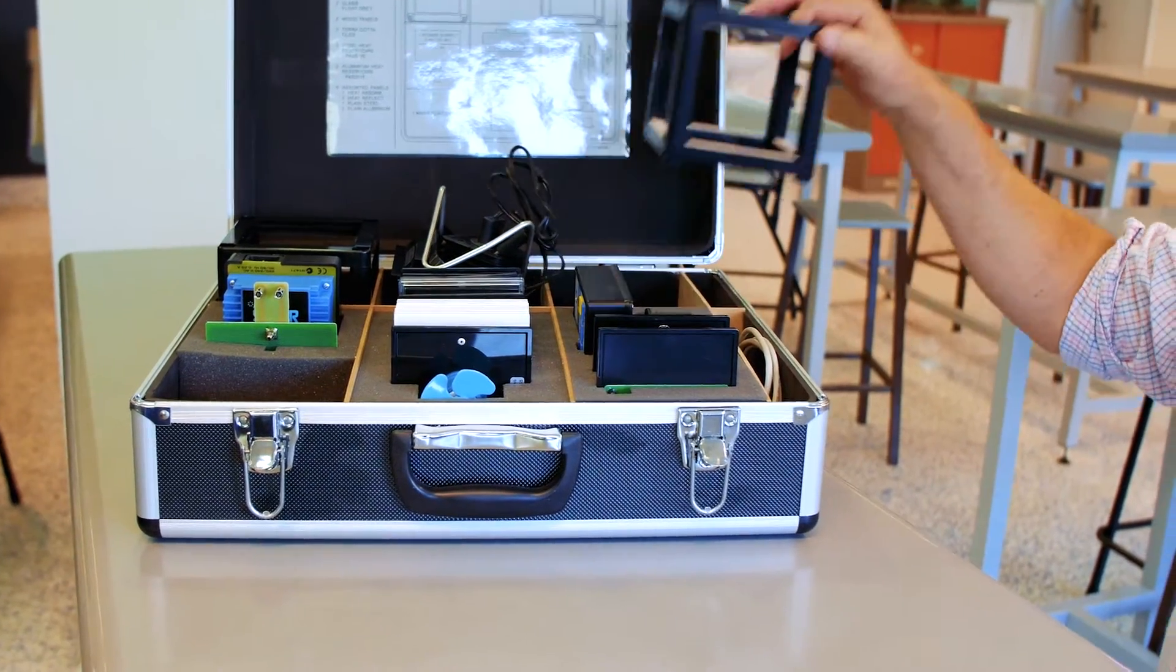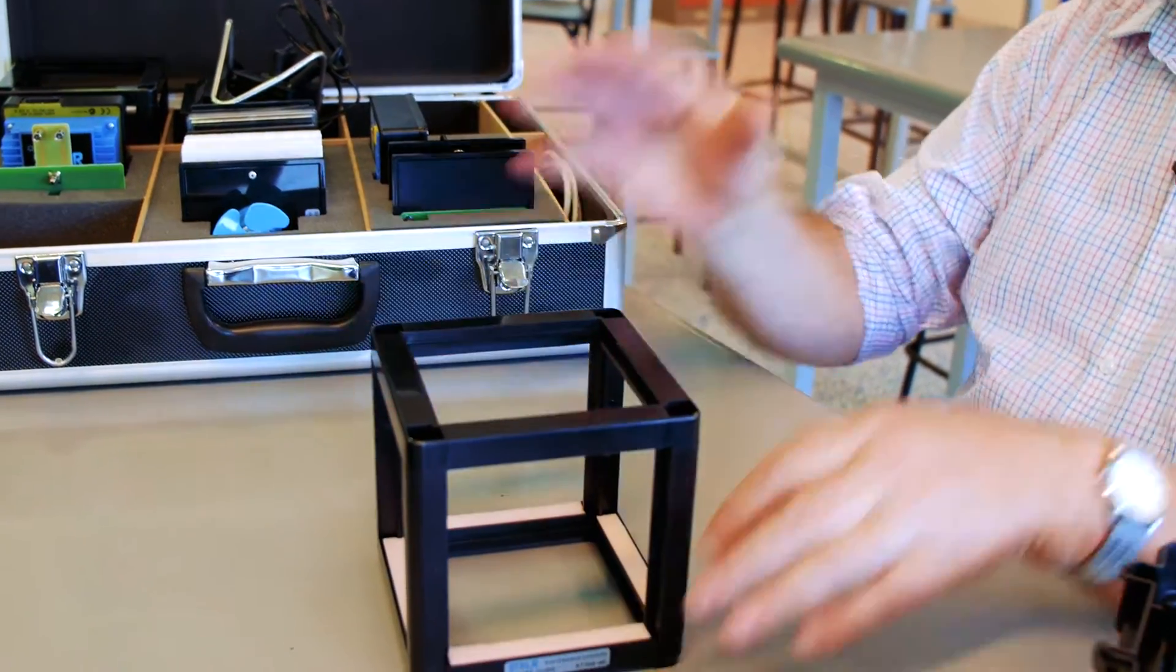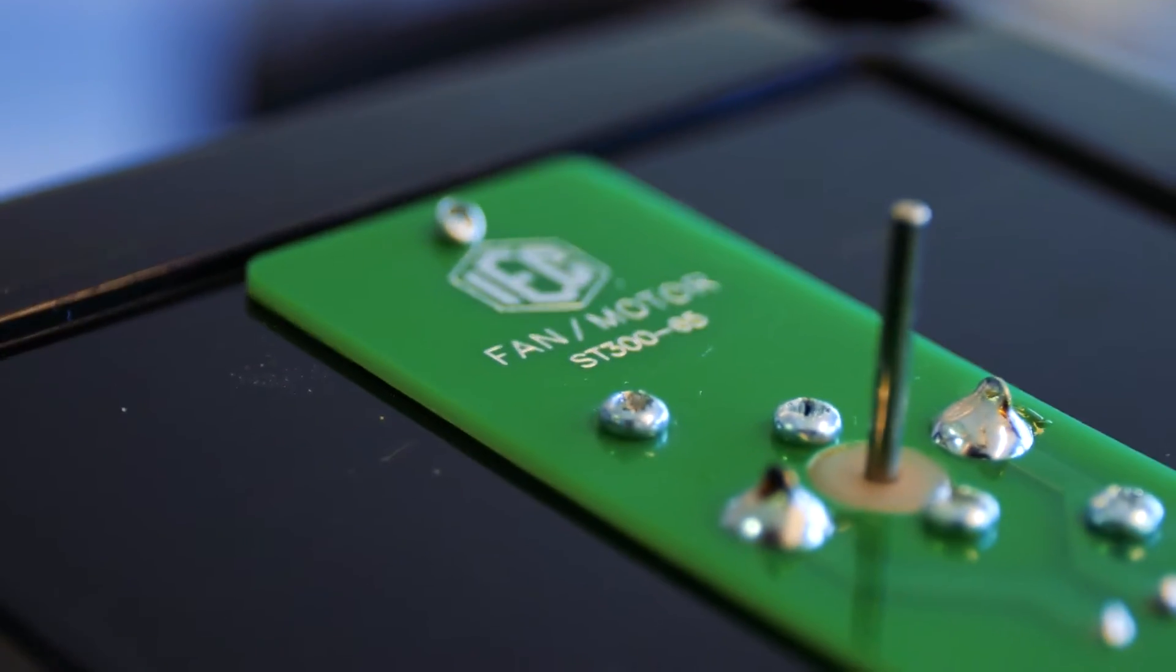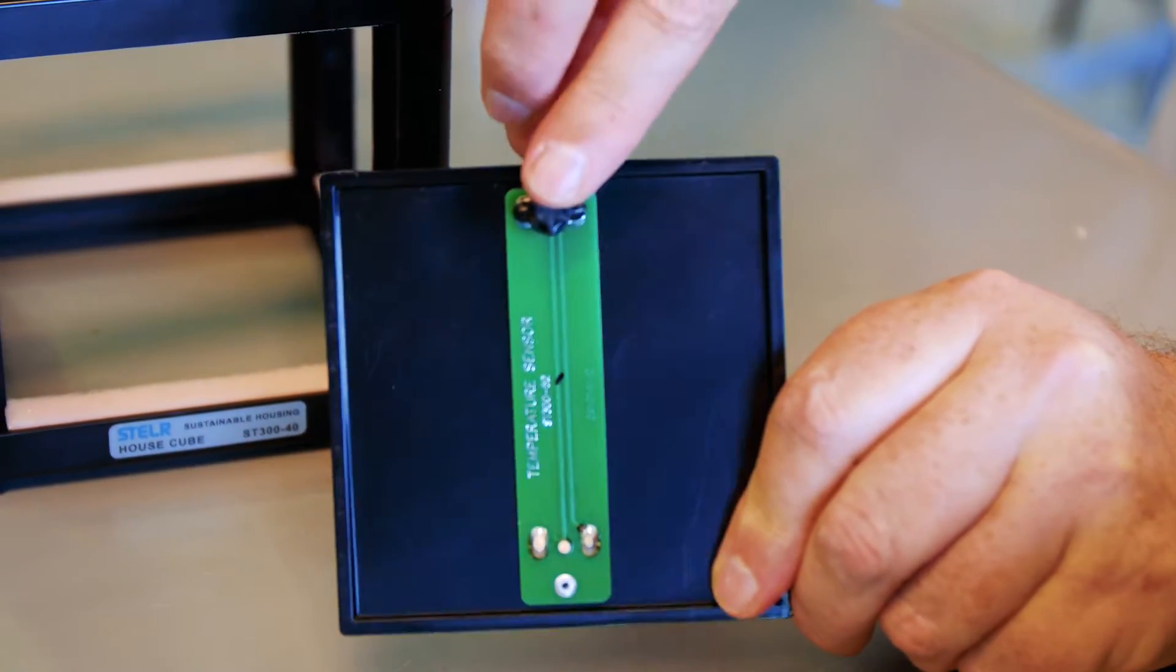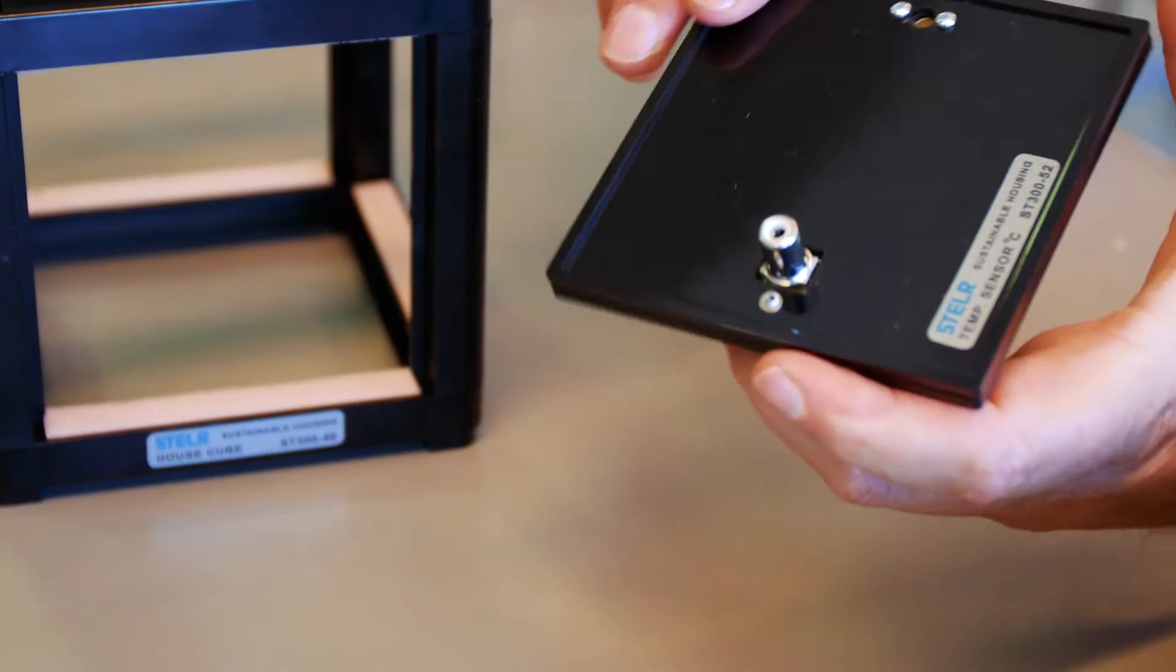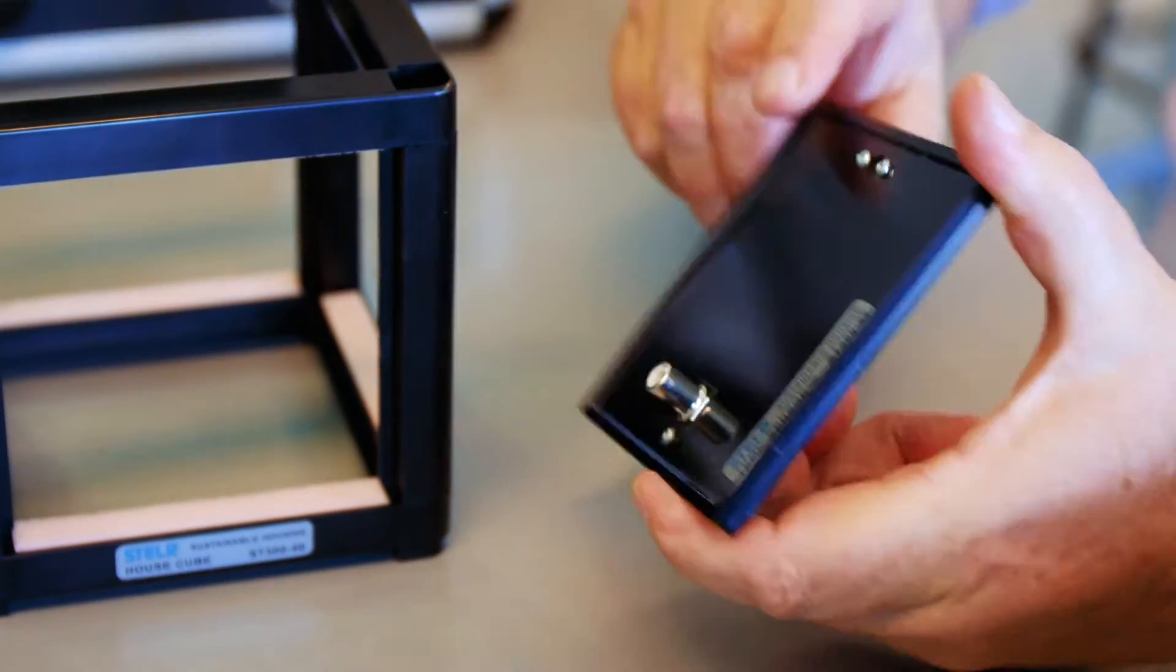We started off by getting out the cube and started to look at the temperature probes. We have the thermistor or the temperature measure there and the connection back to the data logger on the back.